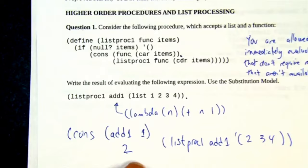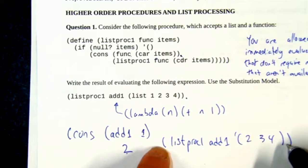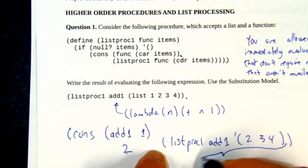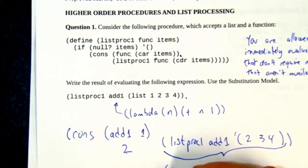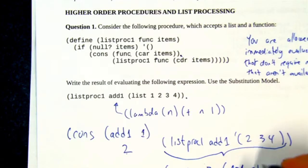So it's consing 2 to the result of doing the rest. Let's do the rest. Instead of writing it all out, we're going to do a replacement for this expression. So that's going to be cons, just carrying this logic forward. We're going to add1 to 2 and get a 3. And I'm going to abbreviate the recursive call as LP1 of add1. And the remainder of the list is 3, 4.